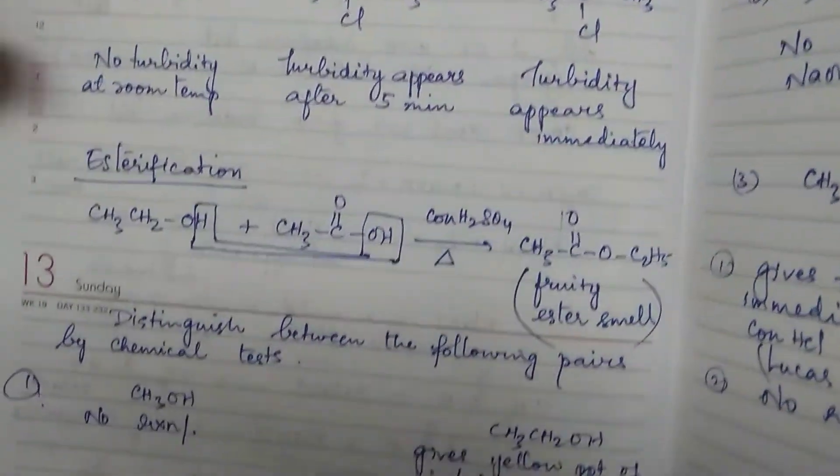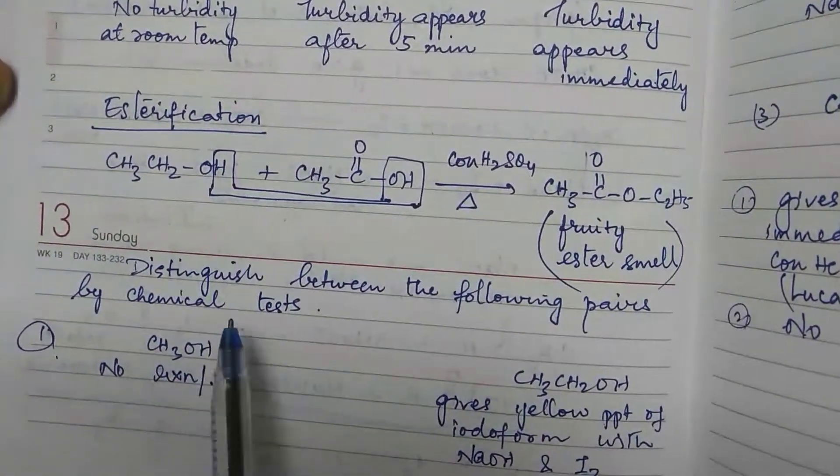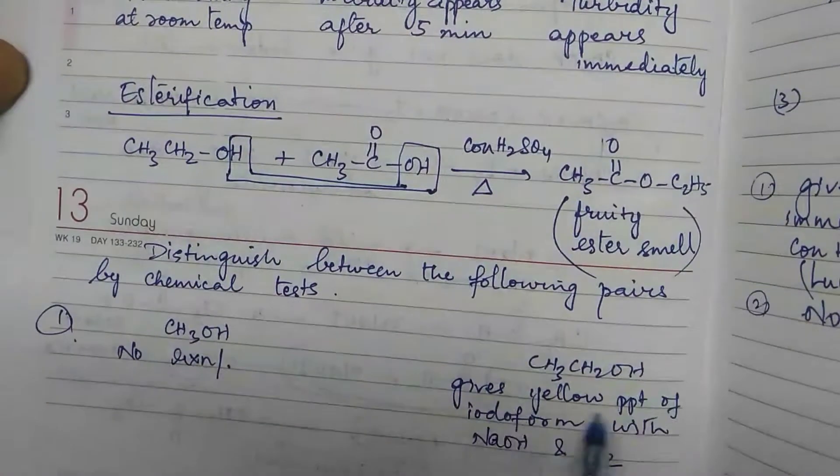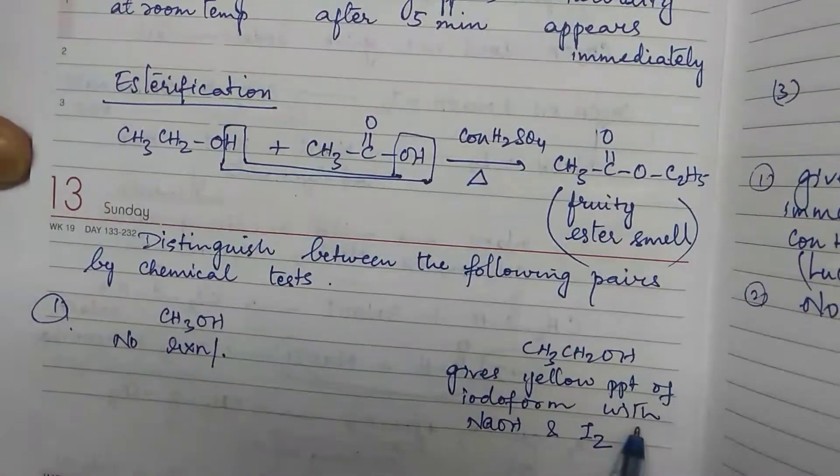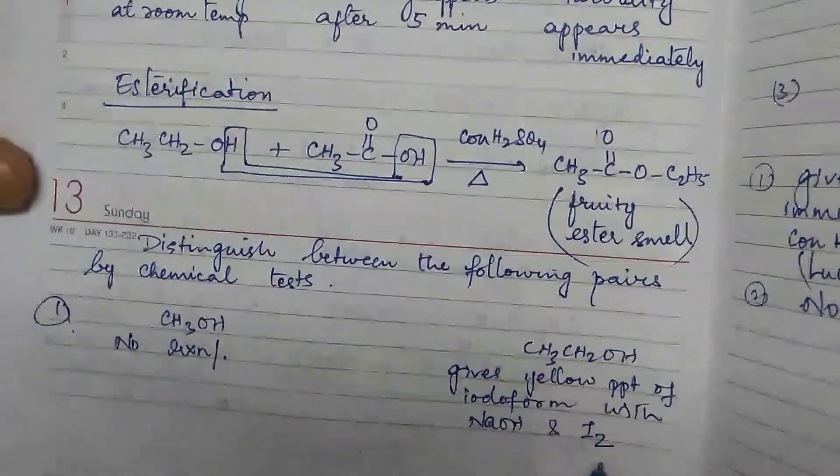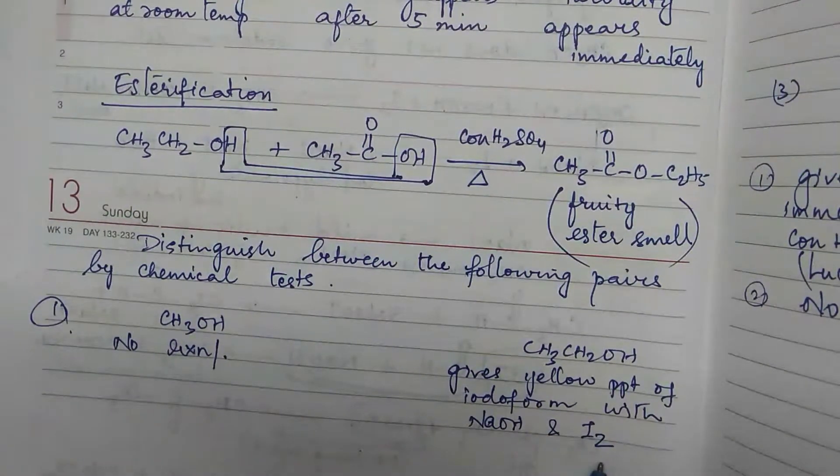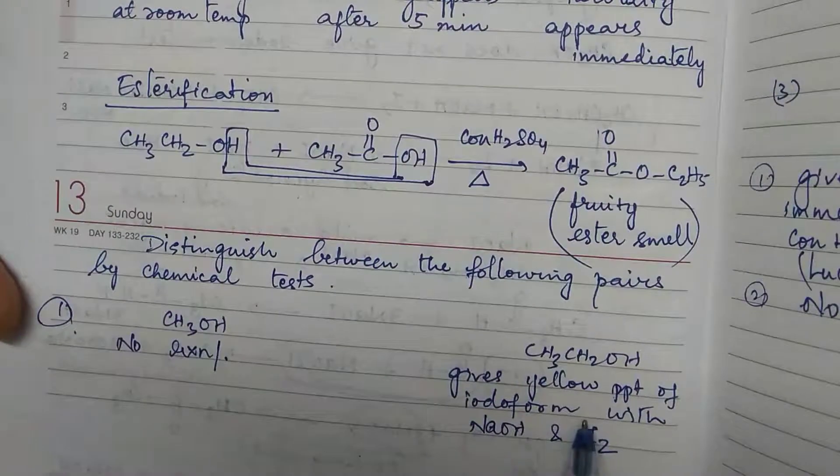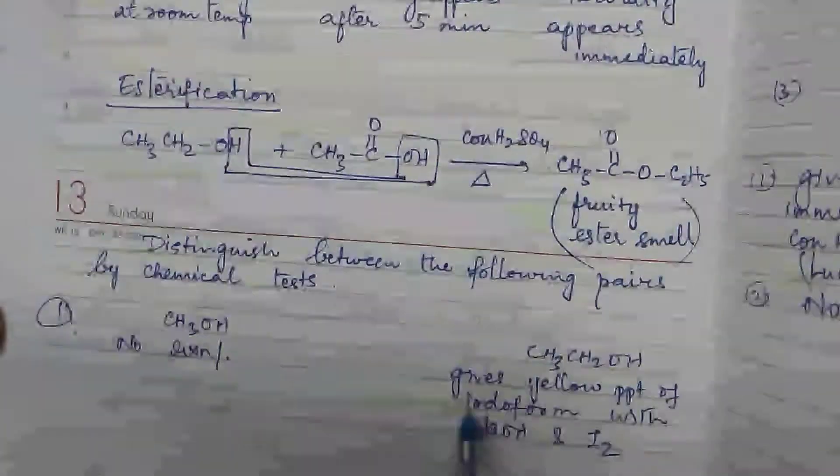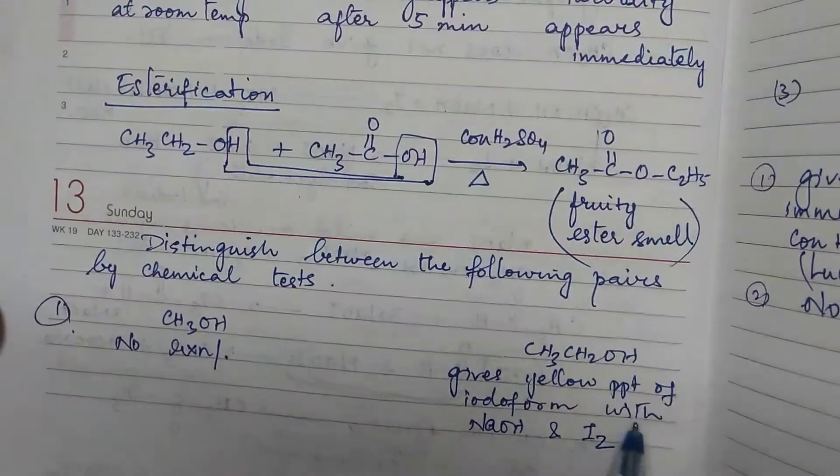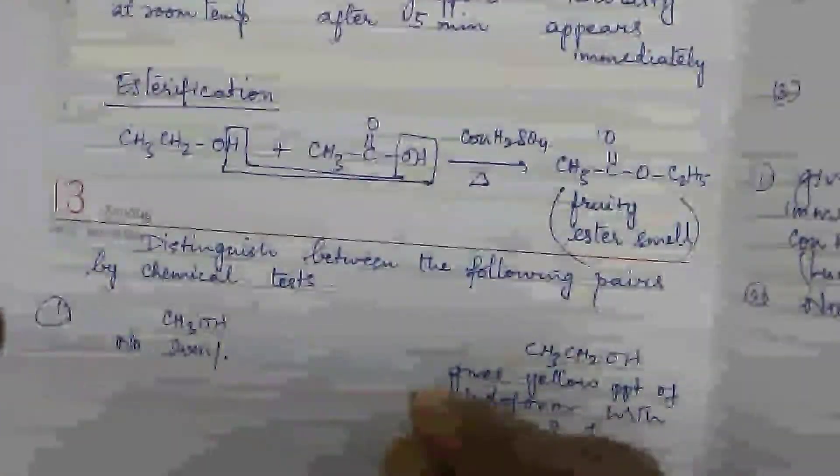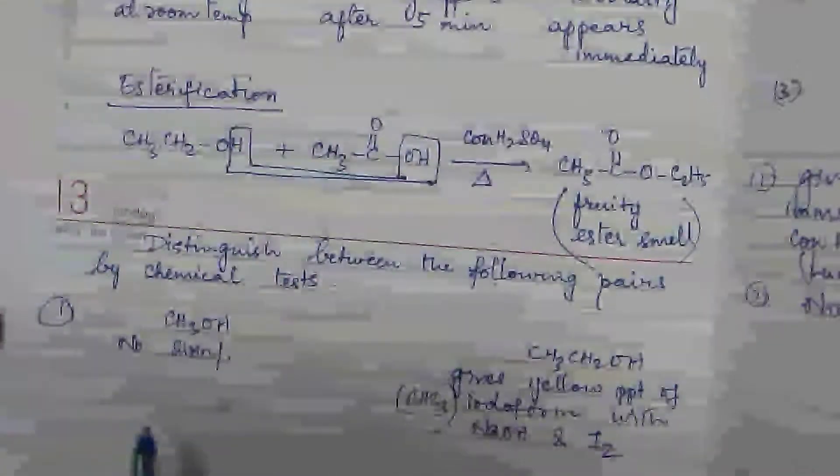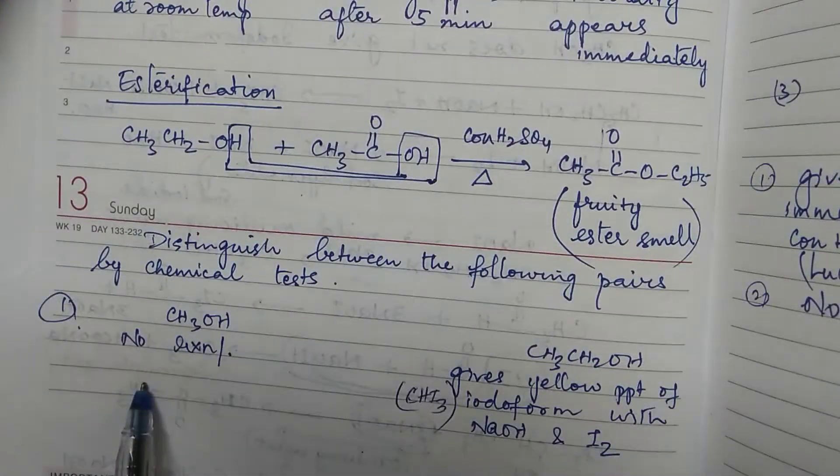Now let us see a few more distinguishing tests. Supposing I am asking you to distinguish between methanol and ethanol. Ethanol gives yellow precipitate of iodoform with sodium hydroxide and iodine. It is not enough if you simply write gives precipitate in iodoform test. You have to write what are the reagents added. If you don't write NaOH and iodine, then your answer has no value. So gives yellow precipitate of iodoform with NaOH and iodine. It's even better if you write the formula of iodoform by the side. Whereas methanol does not show any reaction. It does not give iodoform test.